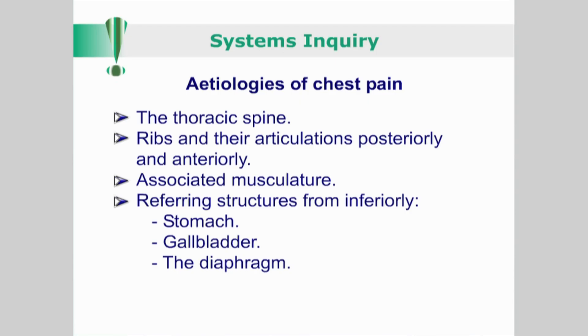Also consider referral from the thoracic spine, the ribs, their articulations posteriorly and anteriorly and associated musculature. For referring structures located inferior to the thorax, consider the stomach, the gallbladder and the diaphragm.